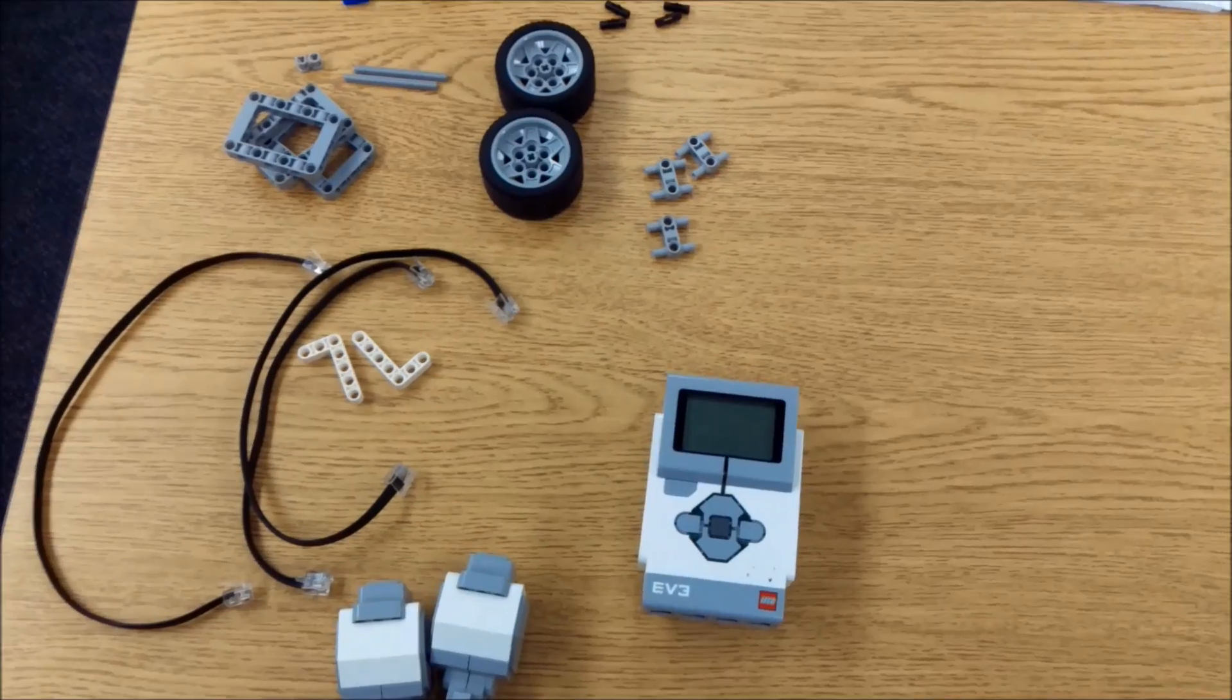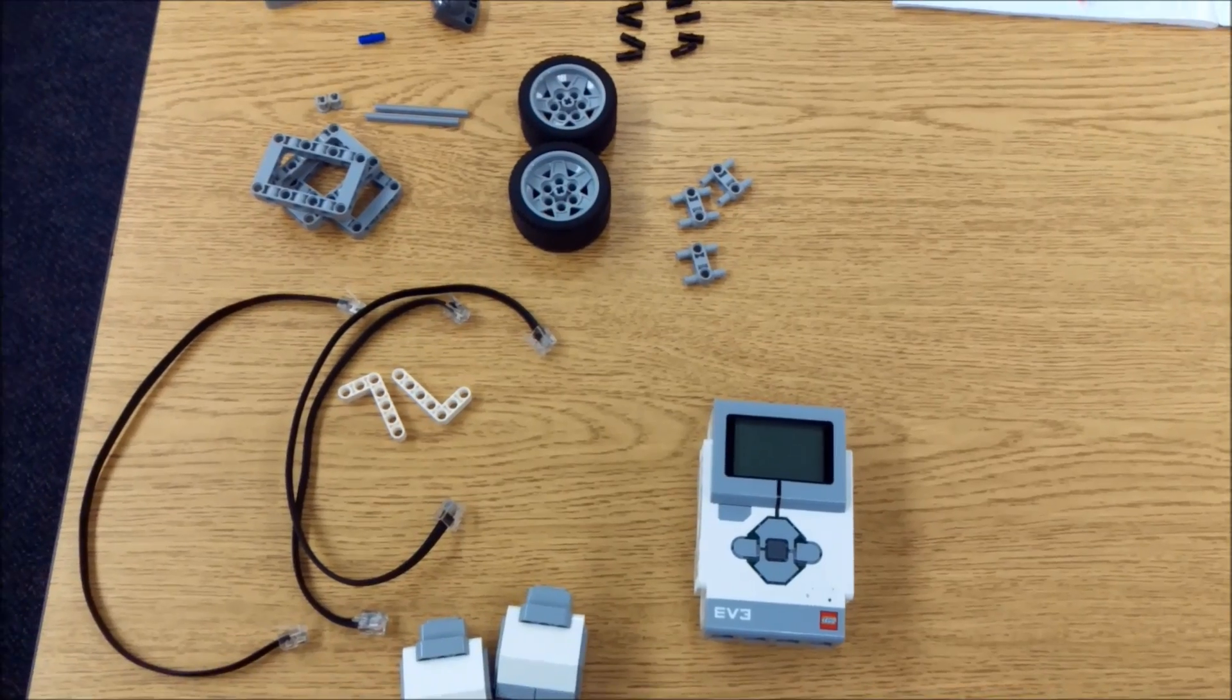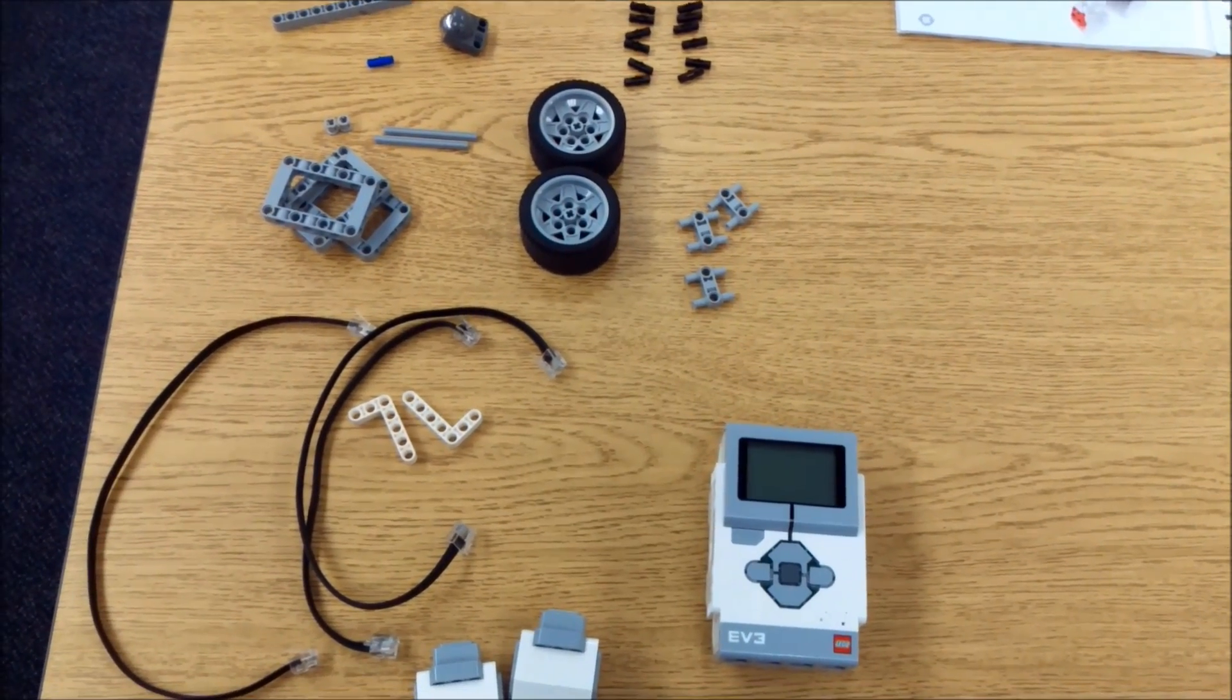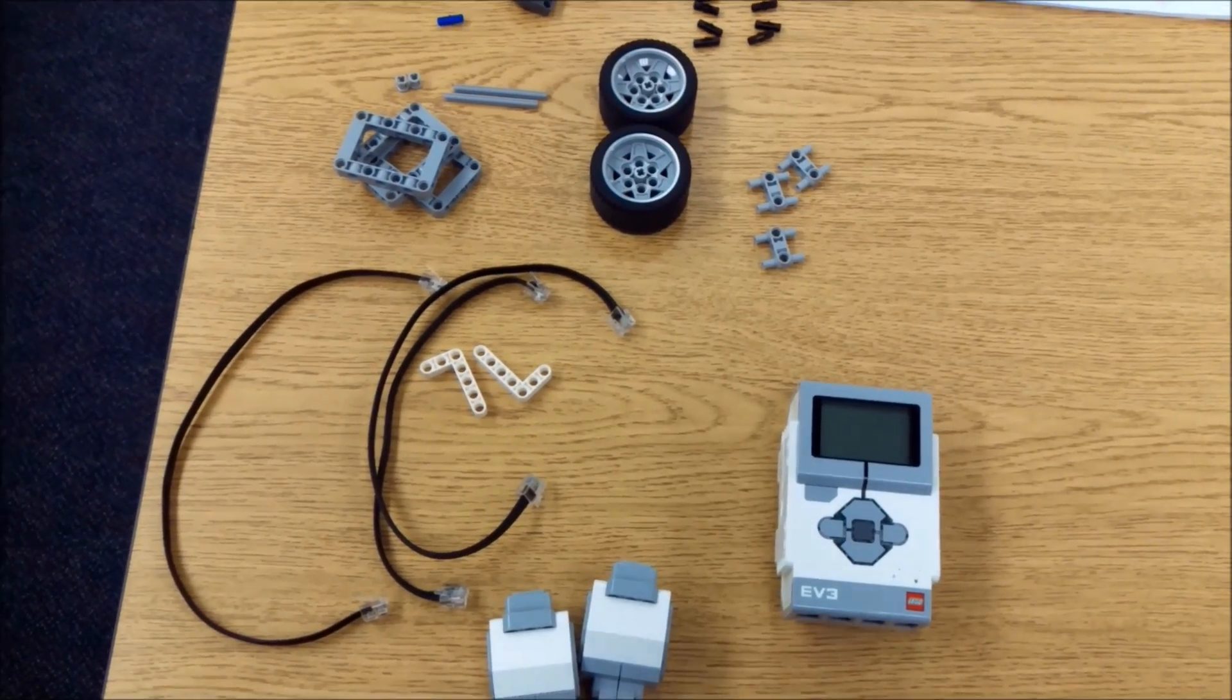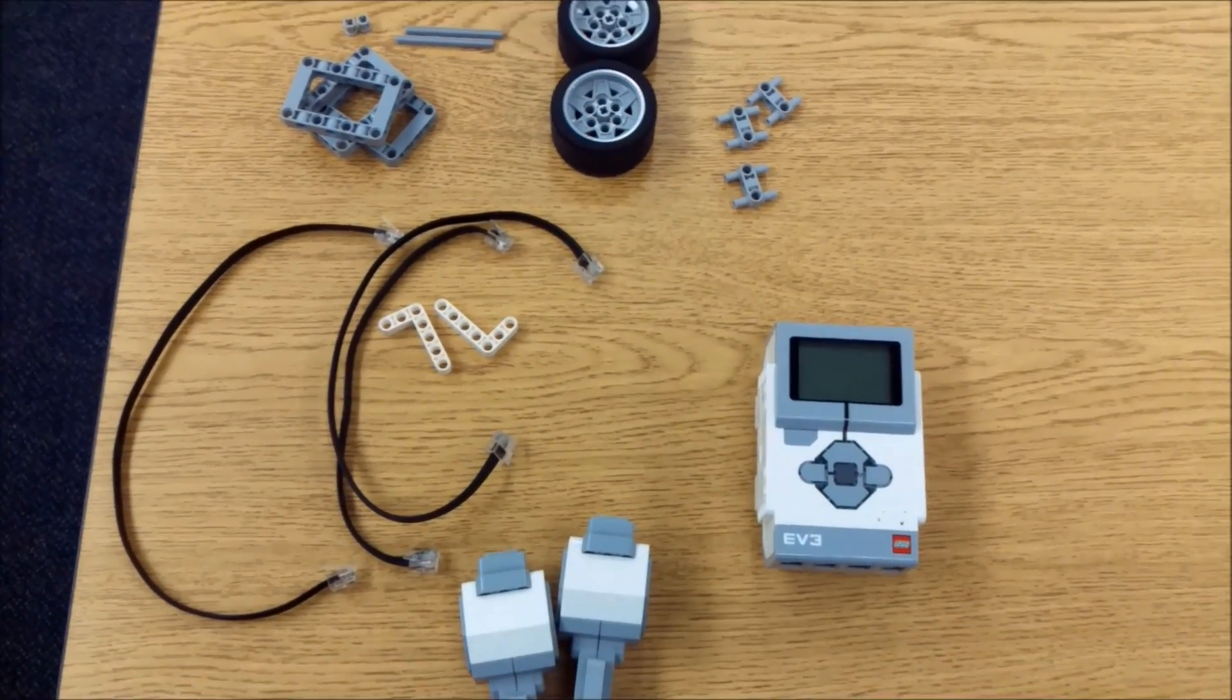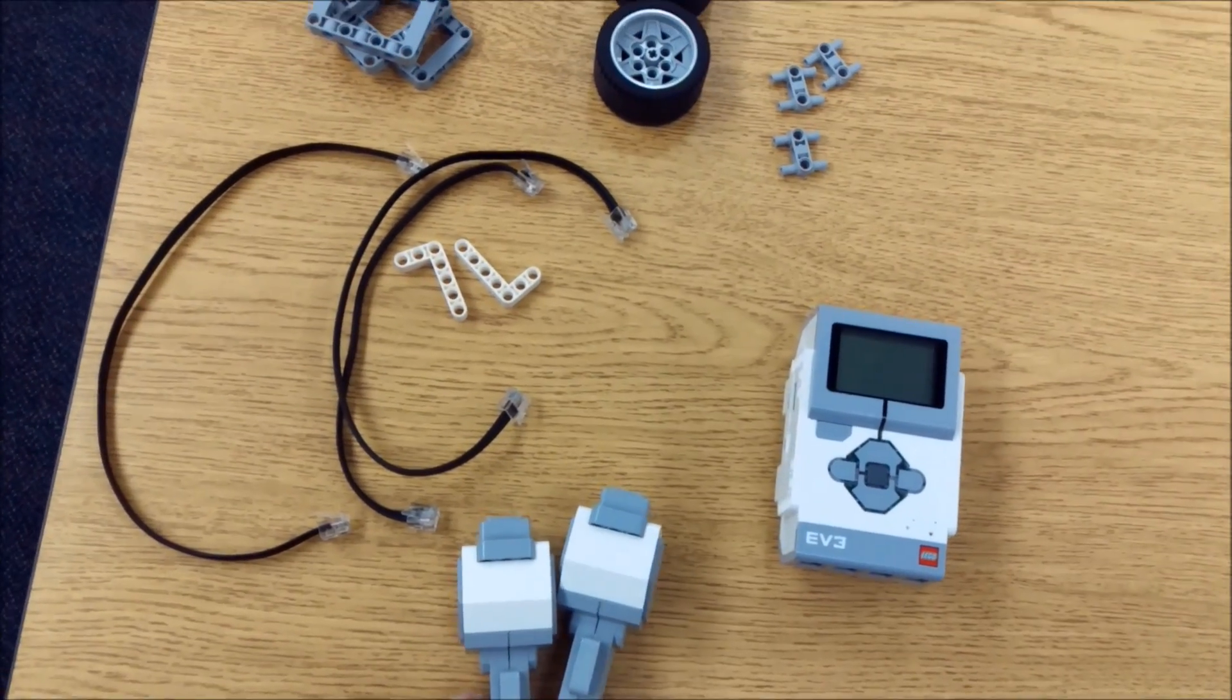Alright everybody, these are the parts you're going to need for your harvester robot. Depending on your needs, especially if you're going to use that ultrasonic sensor, you may need more parts to it. But I'm just using the color sensor so that's all I'm building for. So here we go. Obviously you need your brick, two of your large motors.